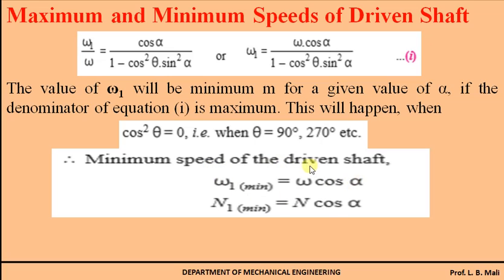So the relation for minimum angular velocity of the driven shaft is ω₁_min = ω · cosα. Similarly, the minimum speed is N₁_min = N · cosα. The speed of the driven shaft is minimum when θ = 90° and θ = 270°, and its magnitude can be found using this equation.